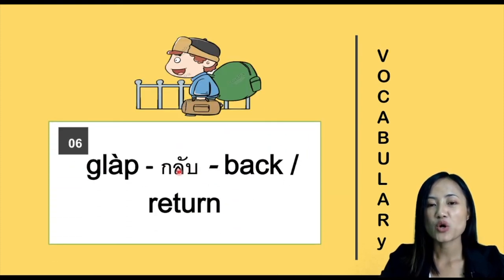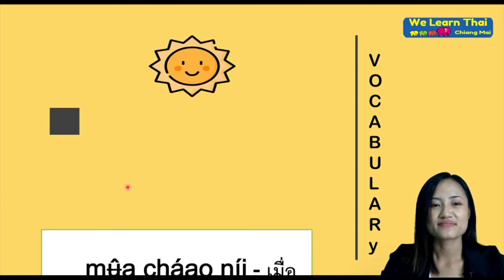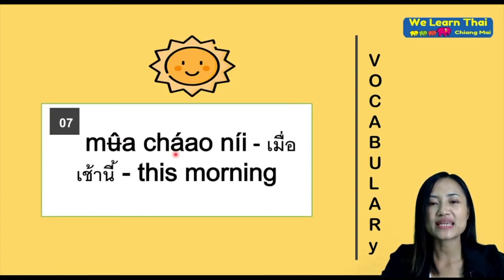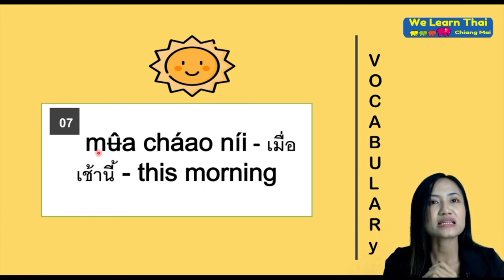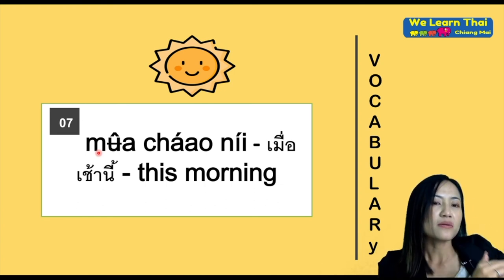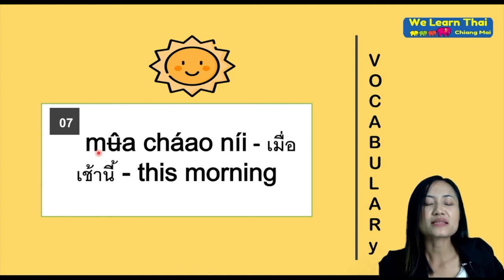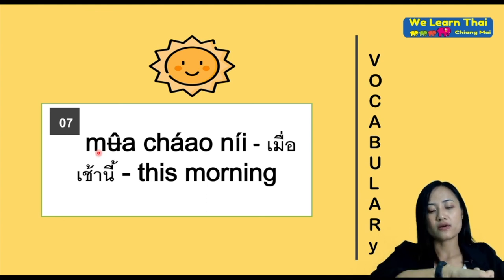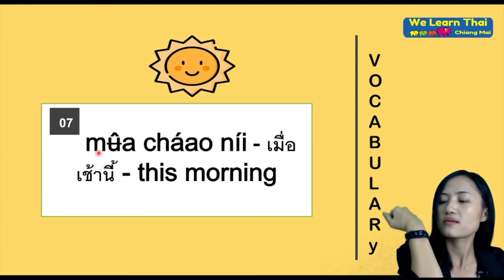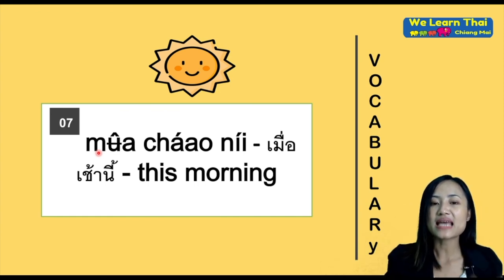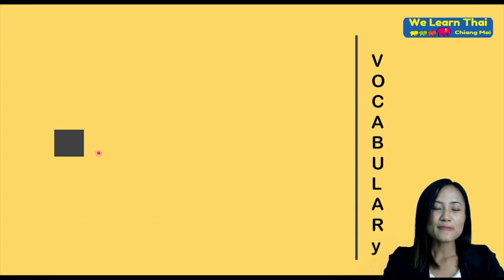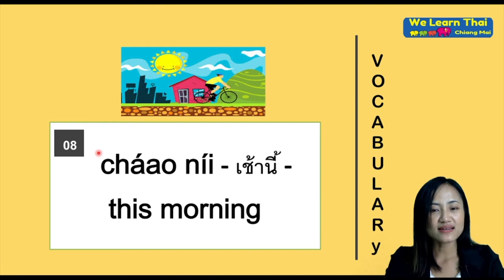'กลับ' means go back. 'เมื่อเช้านี้' means this morning, but talking about the past — it could be today, but today's morning is already in the past. For example, if it is now 4:30, and I talk about today's morning, I will say 'เมื่อเช้านี้'. And 'เช้านี้' simply means this morning.